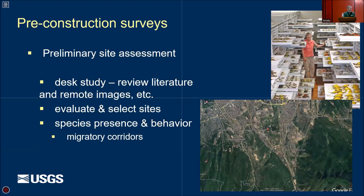The preliminary assessment is a desk study. You can use things like museum specimens, satellite imagery, and literature reports to assess what is happening at a site. That is a very high-level assessment, but it can tell us quite a bit — things like migratory corridors are easier to detect that way than almost any other technique.